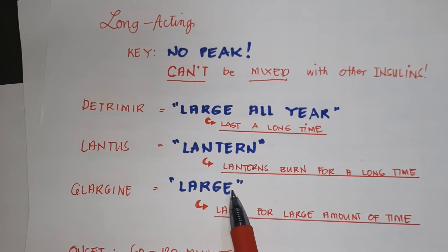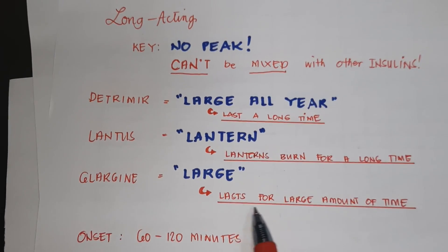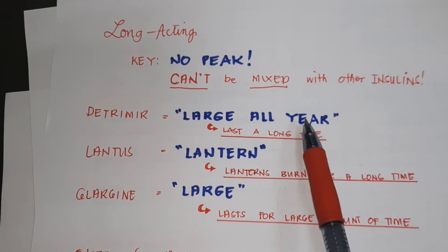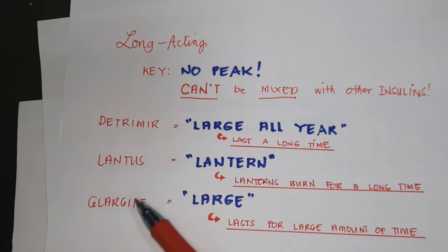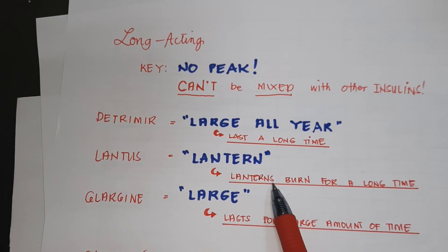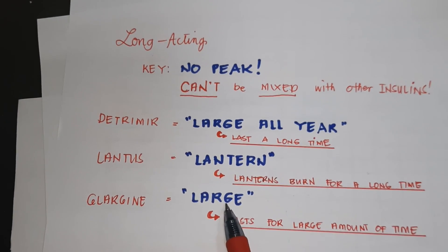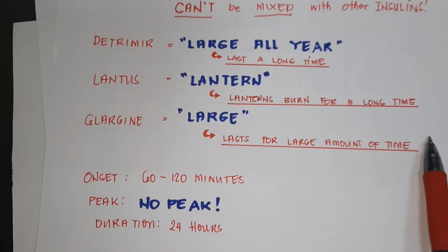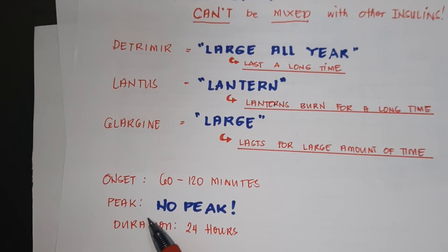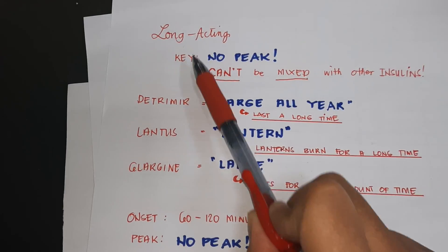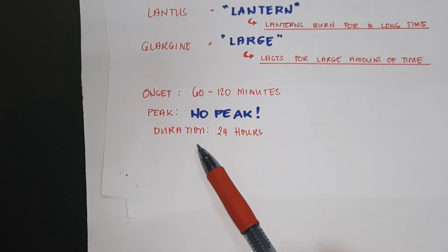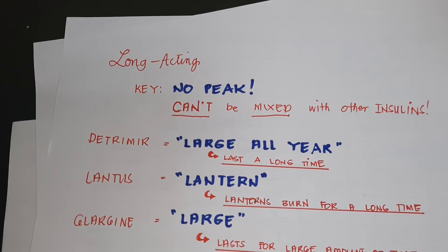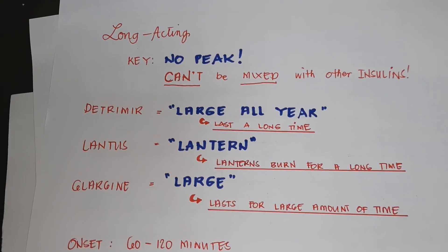The onset of long acting insulin is 60 to 120 minutes. There is no peak for long acting insulins, and the duration is 24 hours. Always remember that.